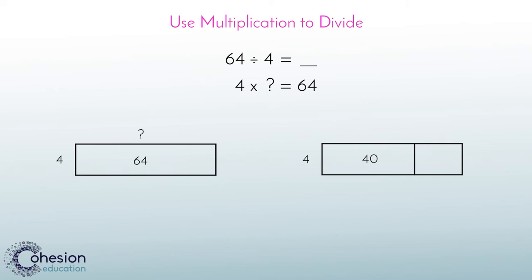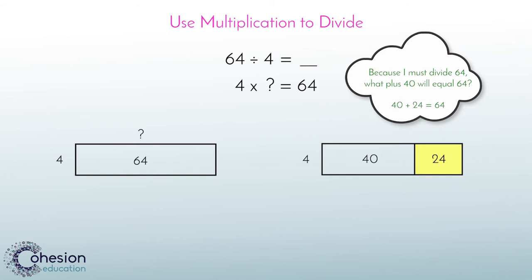To find the second number, we need to think to ourselves what plus 40 will equal our starting number of 64. This would be 24. 40 and 24 equals 64. Our model now represents 64, but made up of two smaller, simpler numbers to work with.